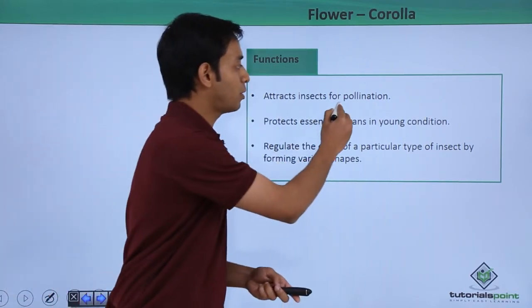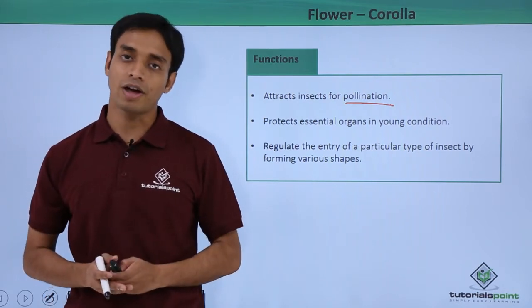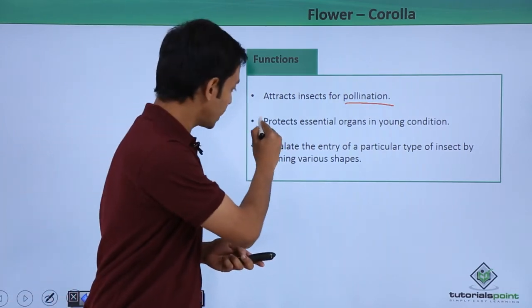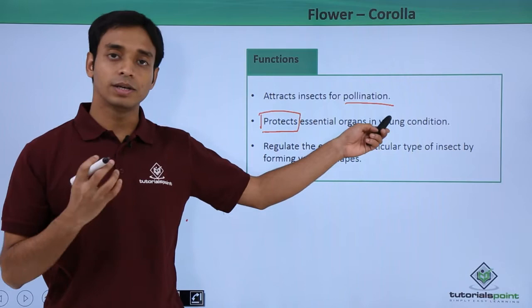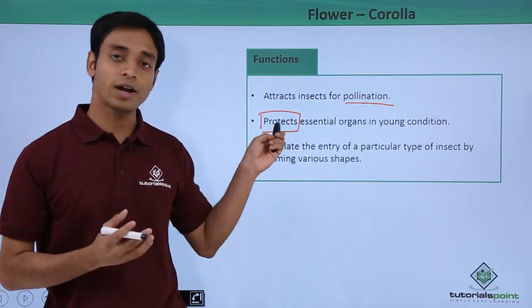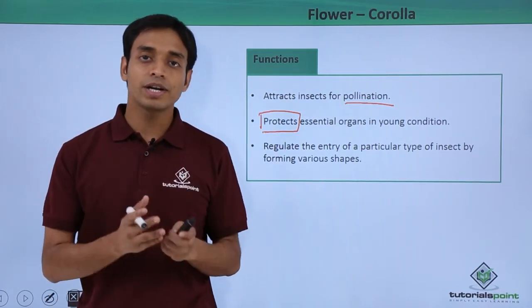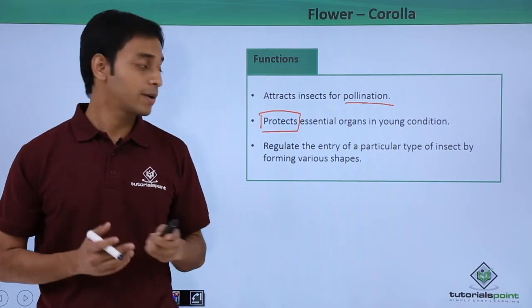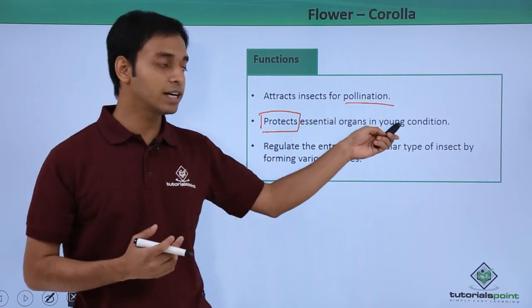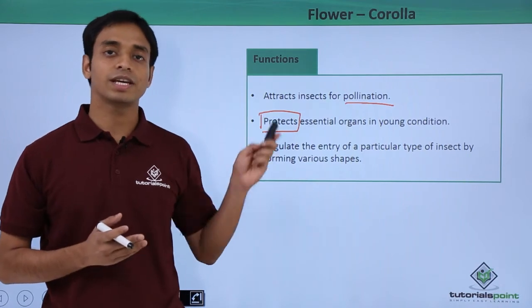Now let us talk about the different functions of a typical corolla. As discussed, corolla attracts insects for pollination, which is required for sexual reproduction in flowering plants. They also play an important part in protecting the essential organs of the flower in its young condition — those are the androecium and the gynoecium, or the stamens and the carpels, which are the reproductive organs of a typical flower.